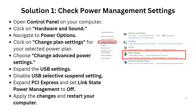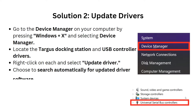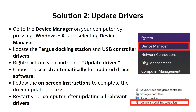Expand the USB settings, then disable the USB selective suspend setting. Then expand the PCI Express and set Link State Power Management to Off. Apply the changes and restart your computer. Now move to solution 2.